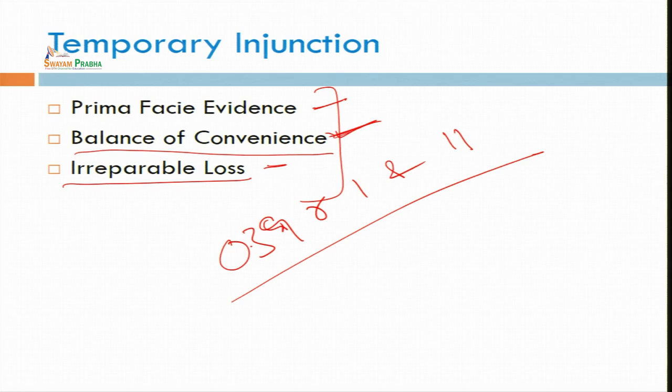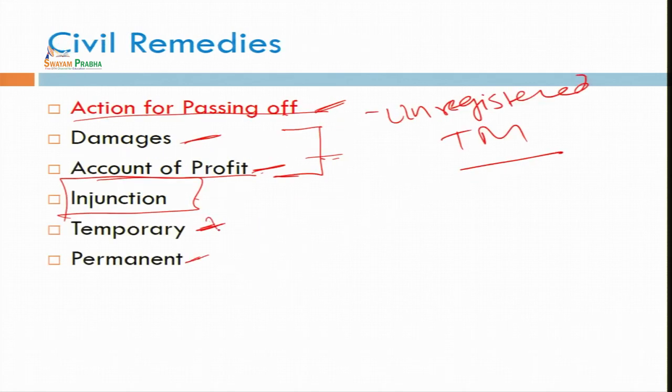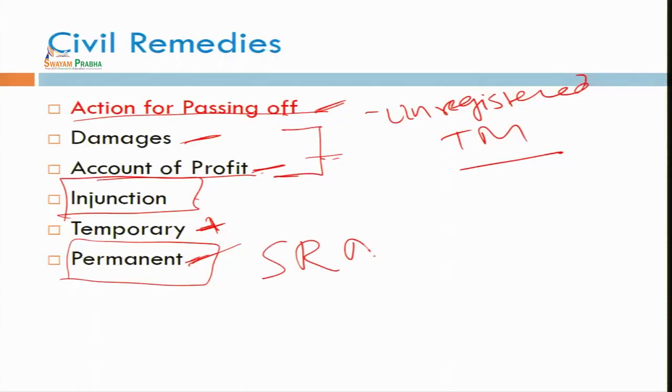The temporary injunction will be granted by the civil court — it is a simple application which can be filed at the start of the case, even though the main case may take 2-5 years. Another remedy is given under the Specific Relief Act. The permanent injunction — you can file a case for permanent injunction and, at the end, a decree will be granted for permanent injunction. These are the civil remedies which are necessary for restraining the infringer who is using your trademark in his business or taking profit out of that business.